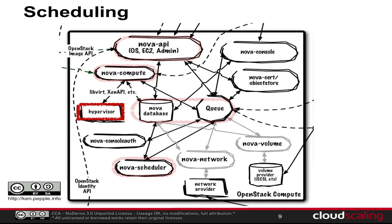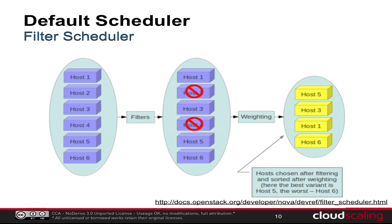Now let's look at how the scheduler actually works itself. This is the default filter scheduler, taken right from the OpenStack docs. It's a filter-and-weigh scheduler: it takes all available compute nodes, filters them based on parameters like amount of free RAM, CPUs, and disk, removing any that don't have enough free resources. Then you weigh the remaining options — the default weighing is by amount of free RAM. You have the option of spreading out first, putting one VM on each machine, or filling up each box one at a time.